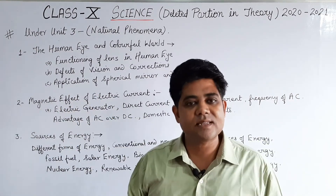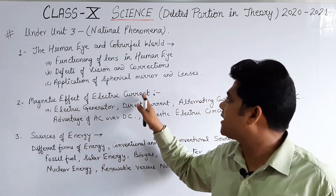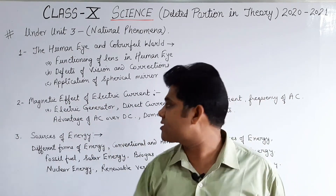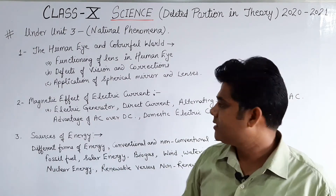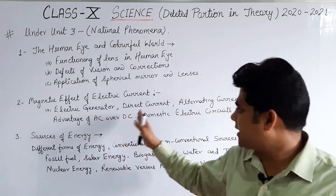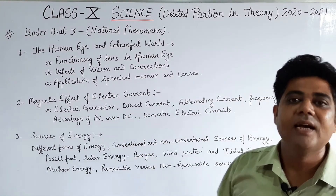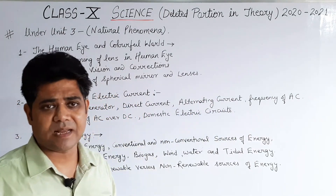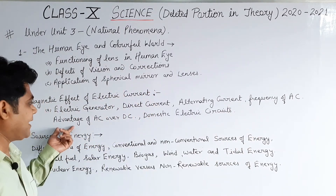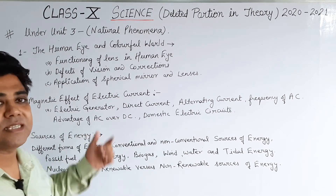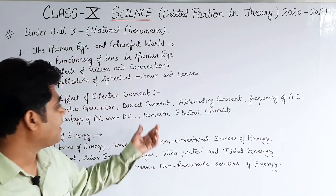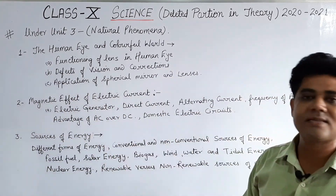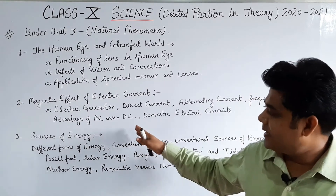The next physics chapter is Magnetic Effects of Electric Current, which is from Unit 4. From this chapter, the deleted portions are: electric generator, direct current (DC), alternating current (AC), frequency of AC (which we used to study as 50 Hz), advantages of AC over DC, and the domestic electric circuit. All these parts have been removed.